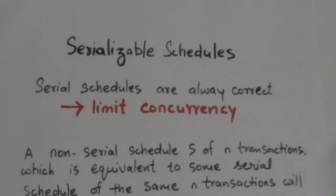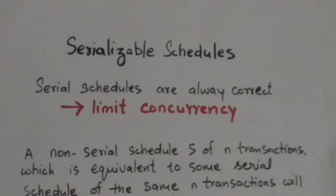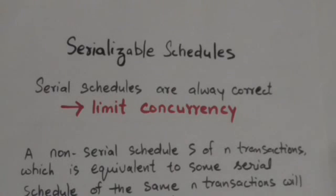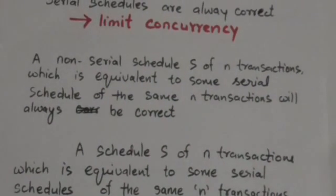Hello friends, welcome back. In this tutorial we will study about serializable schedules. We know that serial schedules are always correct, but serial schedules limit concurrency by prohibiting interleaving of operations. In a serial schedule, if a transaction waits for an input/output operation to complete, we cannot switch the CPU processor to another transaction, thus wasting valuable CPU processing time. A non-serial schedule may or may not be correct.